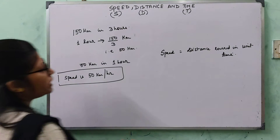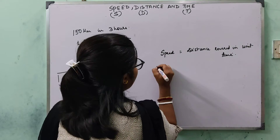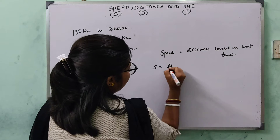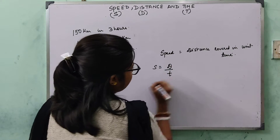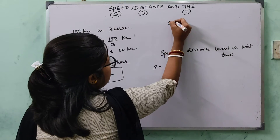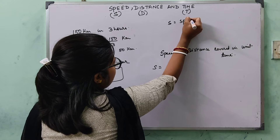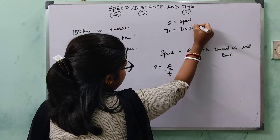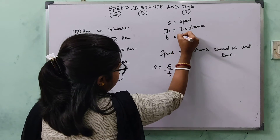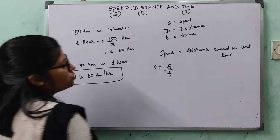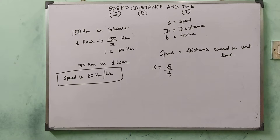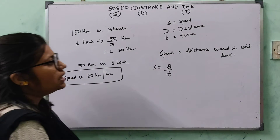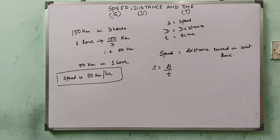If I write it in the form of a formula: speed, which I will write as S, is equal to distance by time. S represents speed, D represents distance, and T will represent time. So speed is equal to distance by time. Speed is the distance covered in unit time.